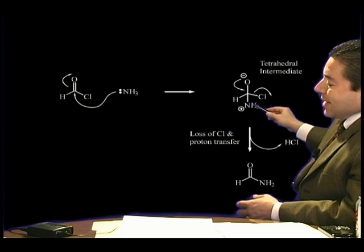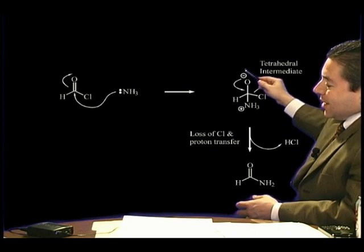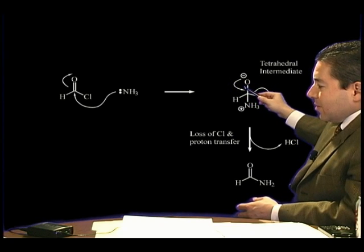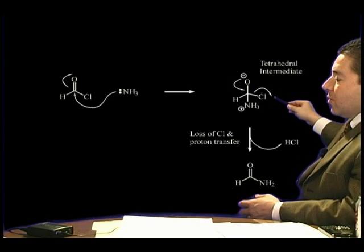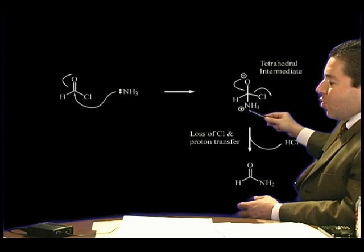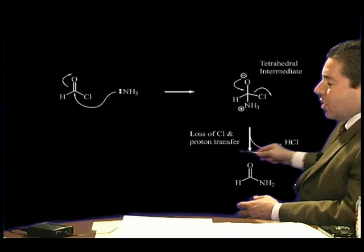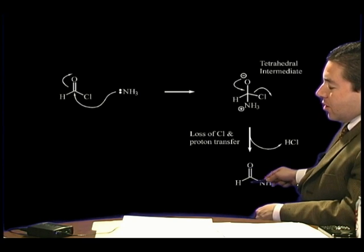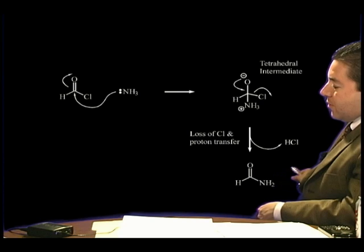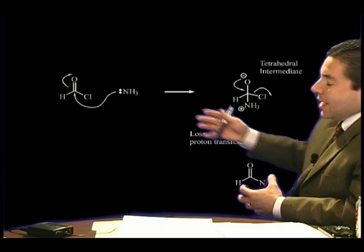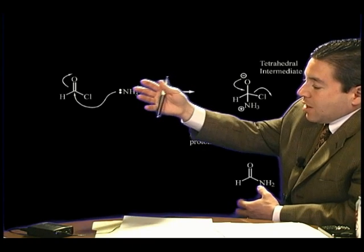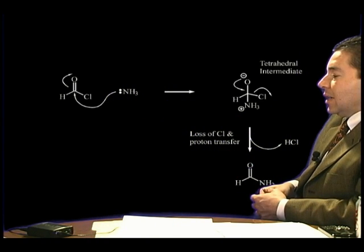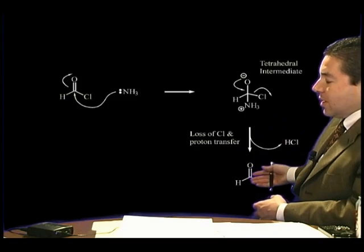That tetrahedral intermediate has a separation of charge with unstable electrons on the oxygen, transiently there as an intermediate. Those electrons come down to push out the leaving group — in this case the chloride — and proton transfer also occurs. Loss of the chloride leaving group and proton transfer lose hydrochloric acid, and you get the amide: the oxygen, the carbon, and the nitrogen. The central idea is you cannot form an amide from the reaction of an amine and a carboxylic acid; instead, you need an amine plus a high-energy acyl derivative. Through these steps, that forms the amide.